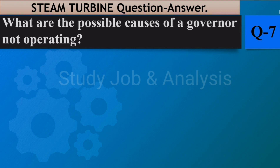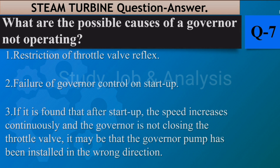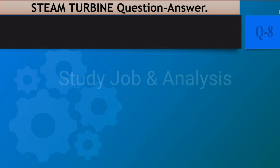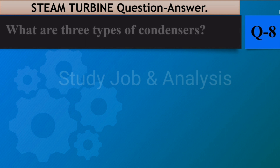Question number seven: What are the possible causes of a governor not operating? Answer: One, restriction of throttle valve or valve reflex. Two, failure of governor control on startup. Three, if after startup the speed increases continuously and the governor is not closing the throttle valve, it may be that the governor pump has been installed in the wrong direction.